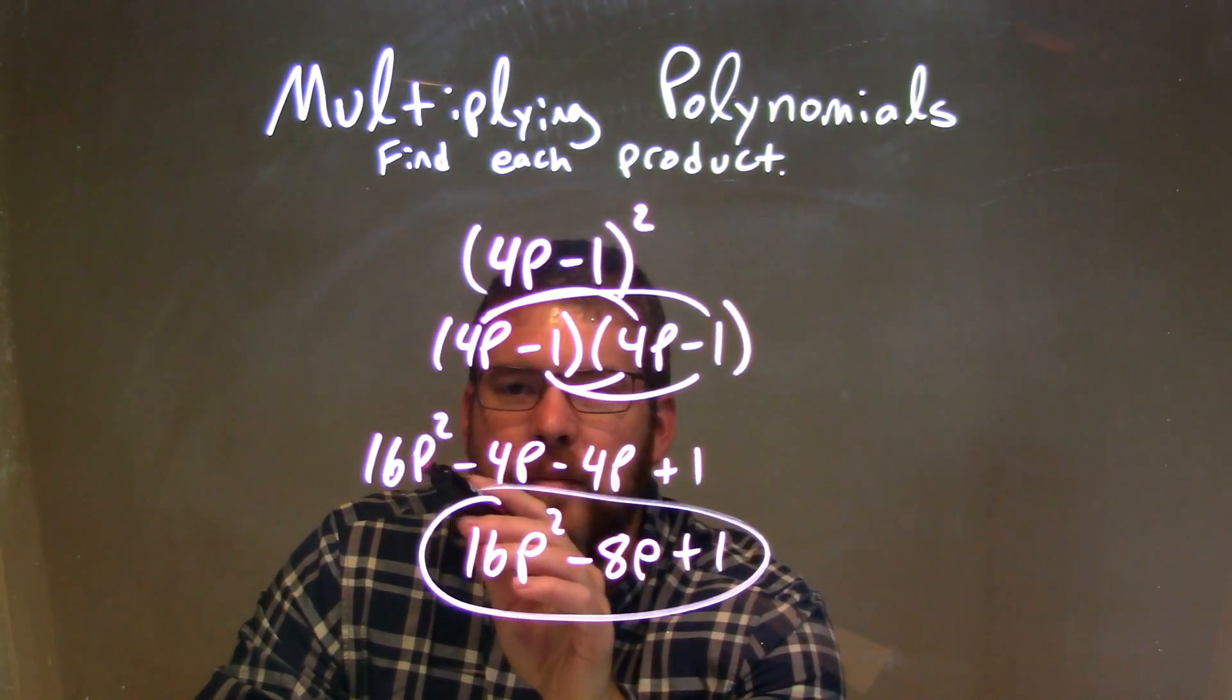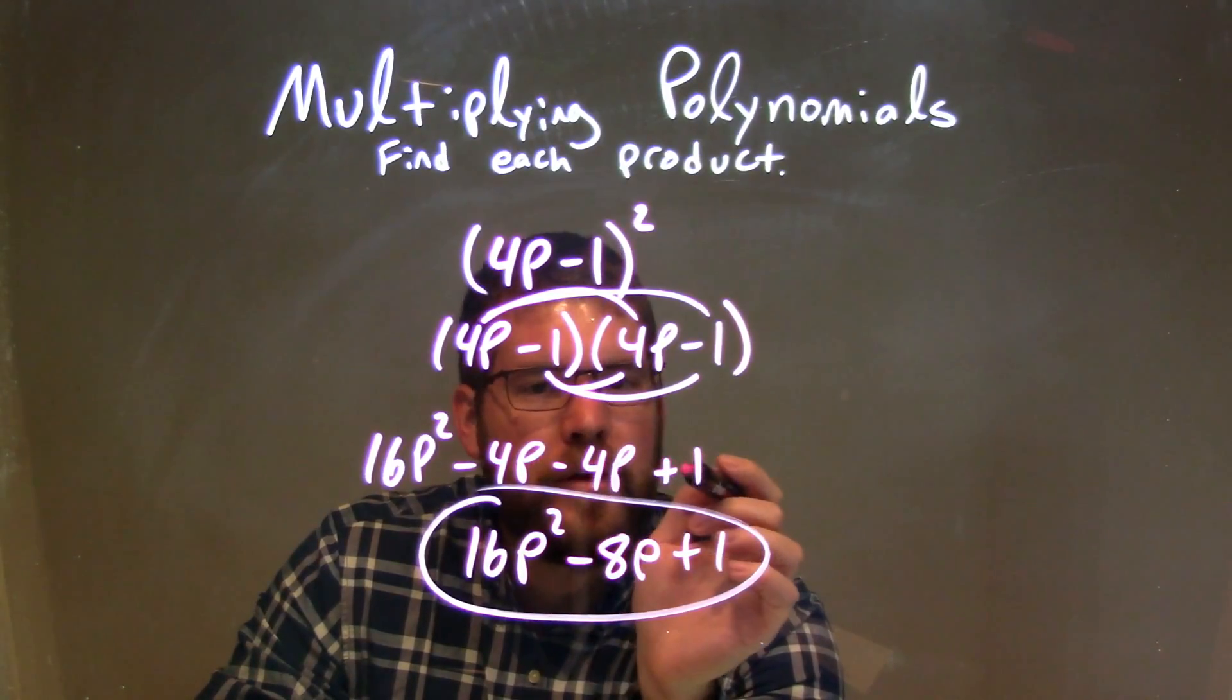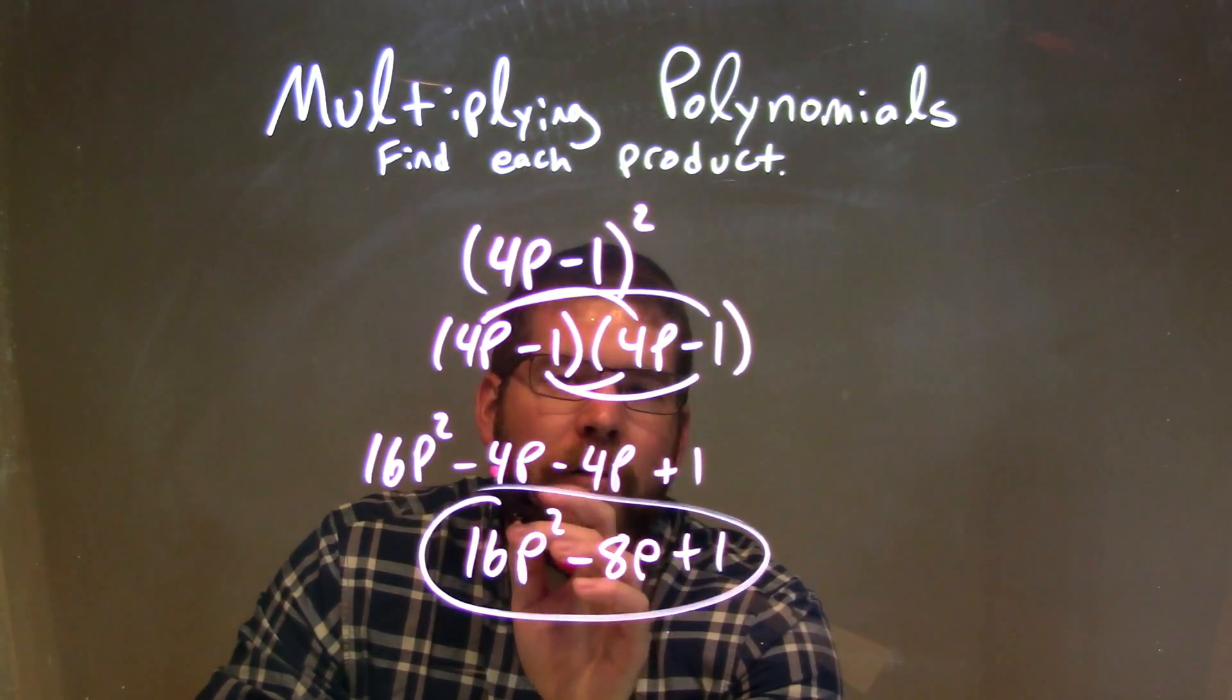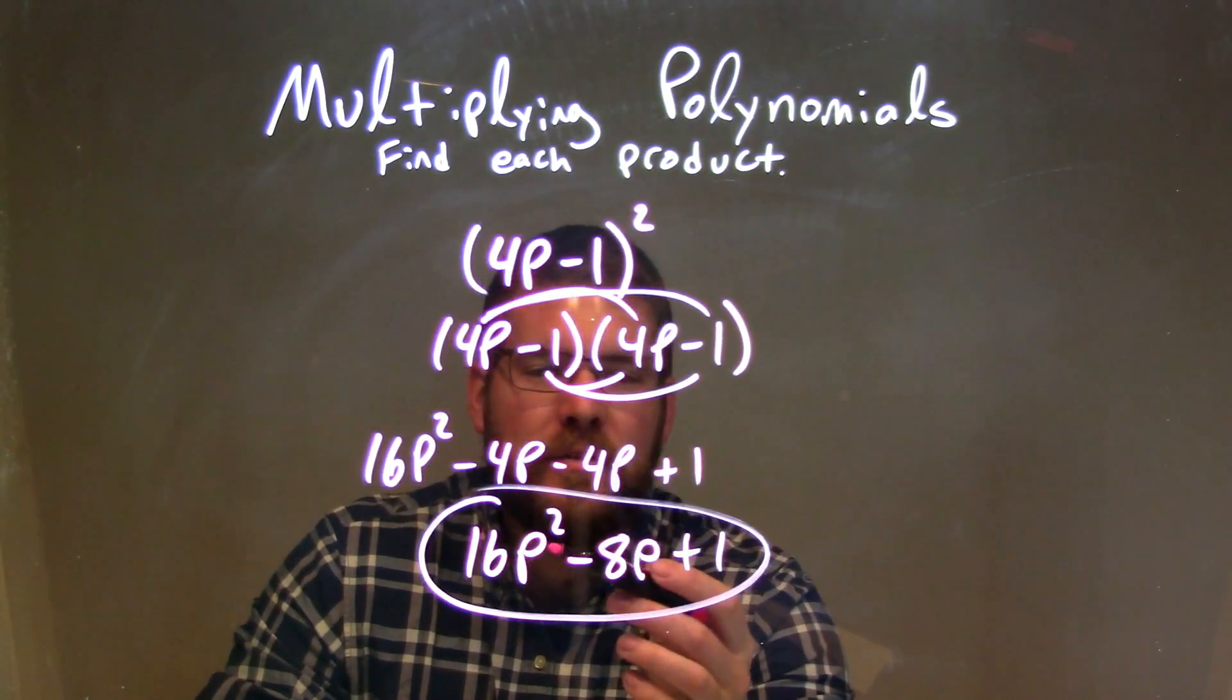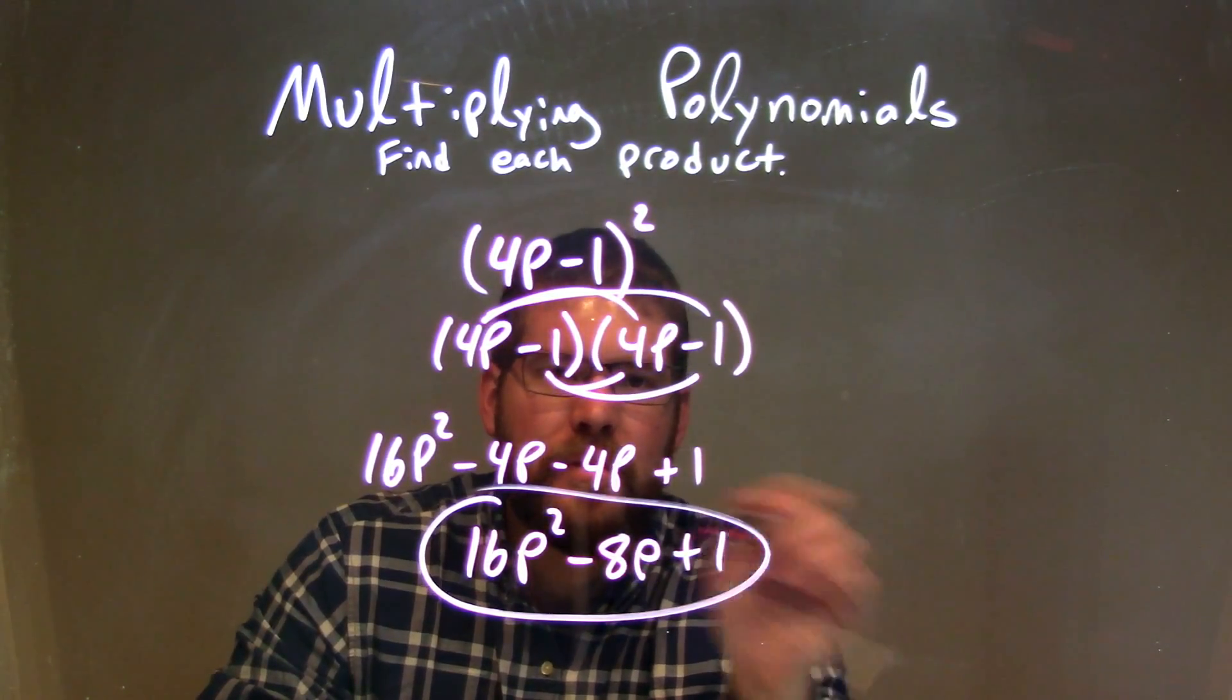Now we have 16p² - 4p - 4p + 1. We combine our like terms of -4p - 4p, which is -8p. So my final answer is 16p² - 8p + 1.